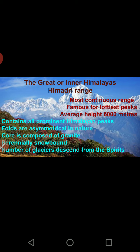Let us begin with the first range, Himadri. Himadri ranges are also called the Greater Himalayas or Inner Himalayas, as they were found in the central region when the plates were folding. This is the most continuous range — we do not have many passes. Passes means the gaps in the mountain range; very few exist here and they are very difficult to cross.